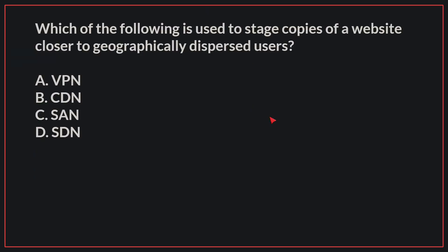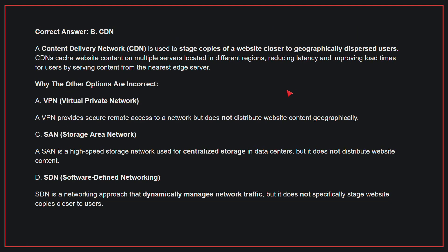Which of the following is used to stage copies of a website closer to geographically dispersed users? The correct answer is B, CDN. A content delivery network is used to stage copies of a website closer to geographically dispersed users. CDNs cache website content on multiple servers located in different regions, reducing latency and improving load times for users by serving content from the nearest server.